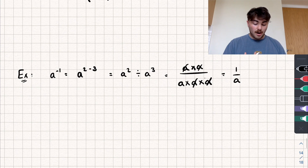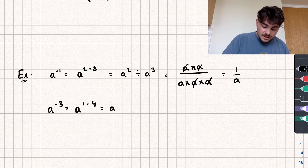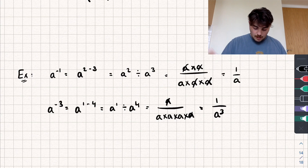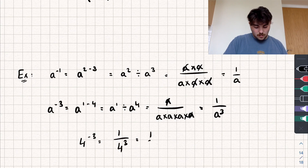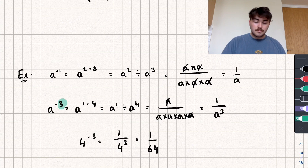For a negative power other than negative one, say a to the power of negative three, we write it as a to the power of one minus four, which equals a over a to the power of four. One a cancels, leaving one over a cubed. For a concrete example: four to the power of negative three equals one over four cubed, which is one over 64. The rule is: take the reciprocal of the base to remove the negative sign, then apply the positive power normally.